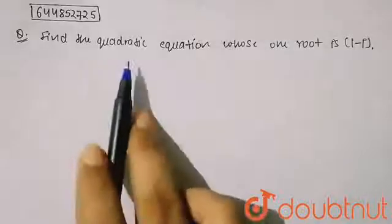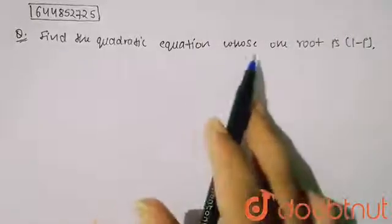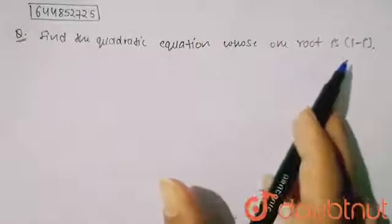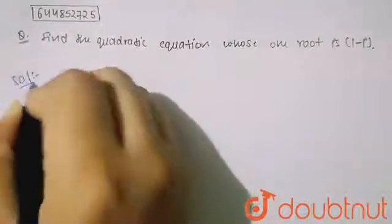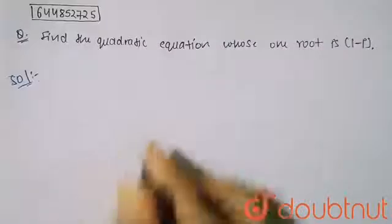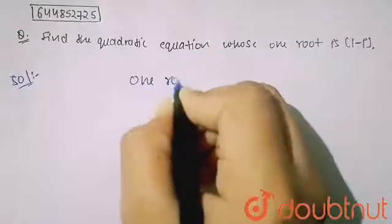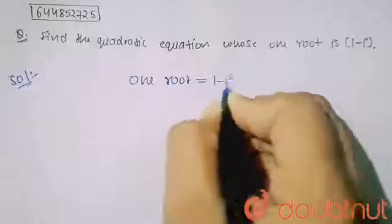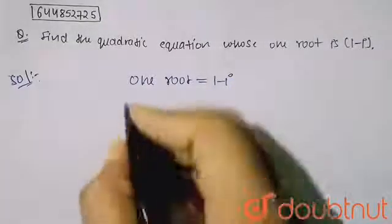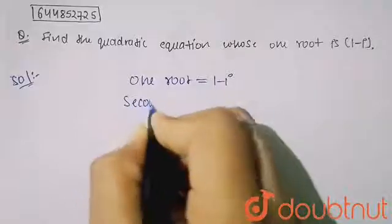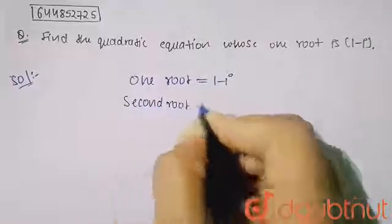It is given: find the quadratic equation whose one root is 1-i. So here we have to find a quadratic equation. My one root is given as 1-i, and the second root will be the conjugate of it. So my second root will be equal to 1+i.